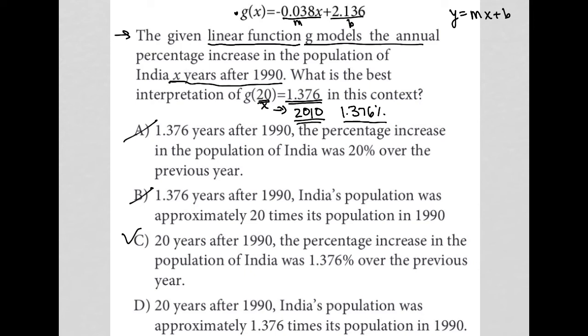Choice D says 20 years after 1990, so I definitely like that. India's population was approximately 1.376 times its population in 1990. That sounds good in some ways, except the question does not say that g models the multiple of the population in 1990. It says that it represents the annual percentage increase.